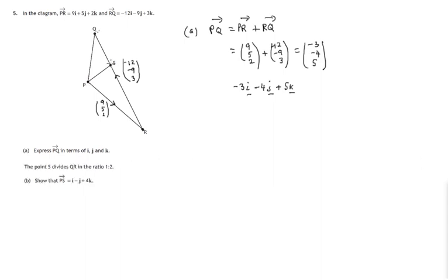Show that P to S, this journey here from P to S, is equal to this. Okay, well let's try the same method as we tried before. Let's go the scenic route from P to R, and then from R to S. And what do we know about from R to S? Well we're told in this question that the point S divides Q to R in the ratio one part to two parts. So that's one bit, and that is two bits.